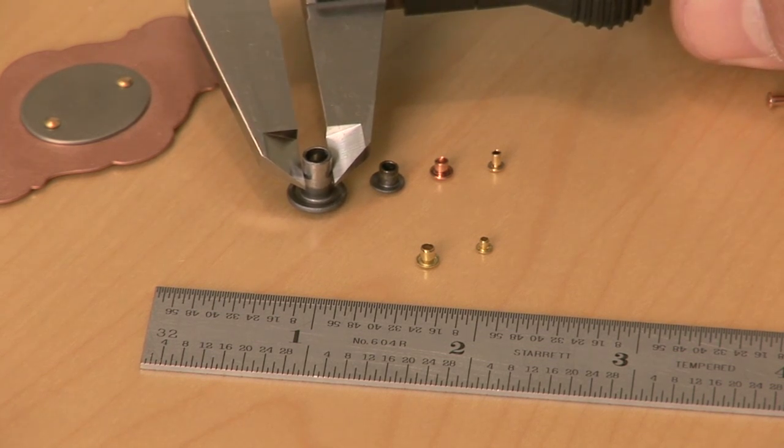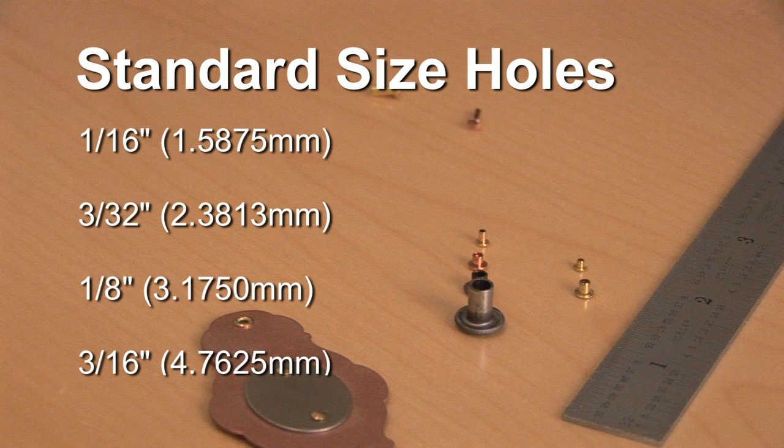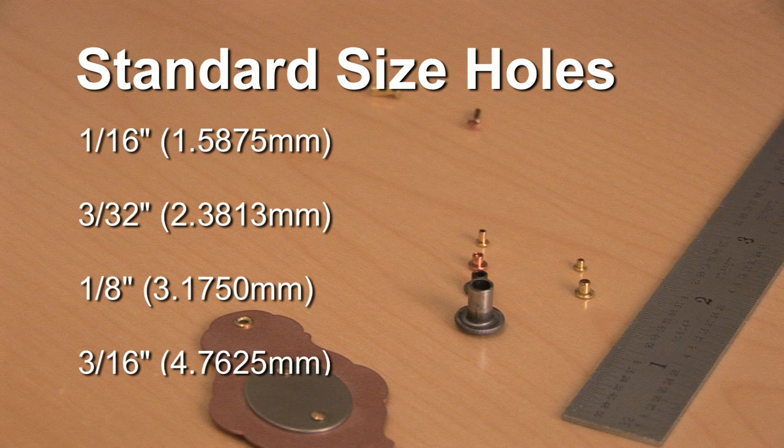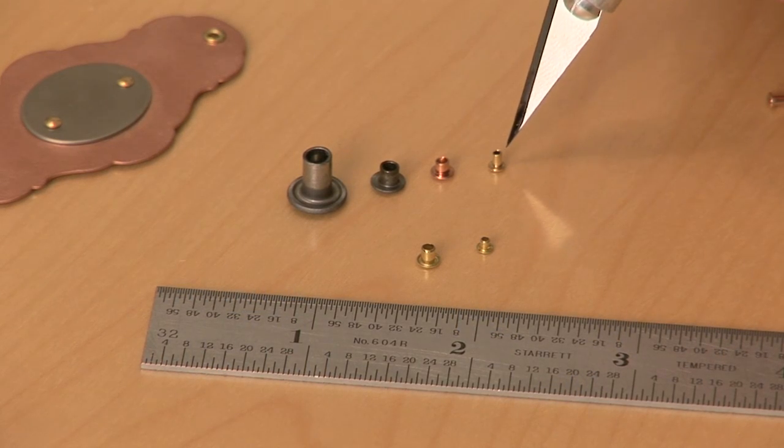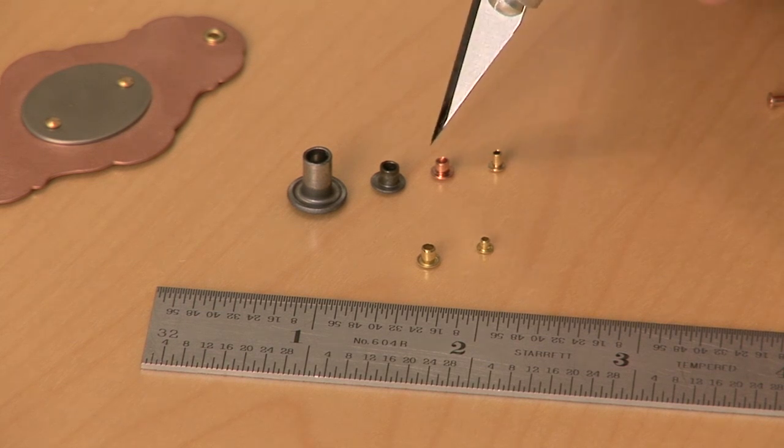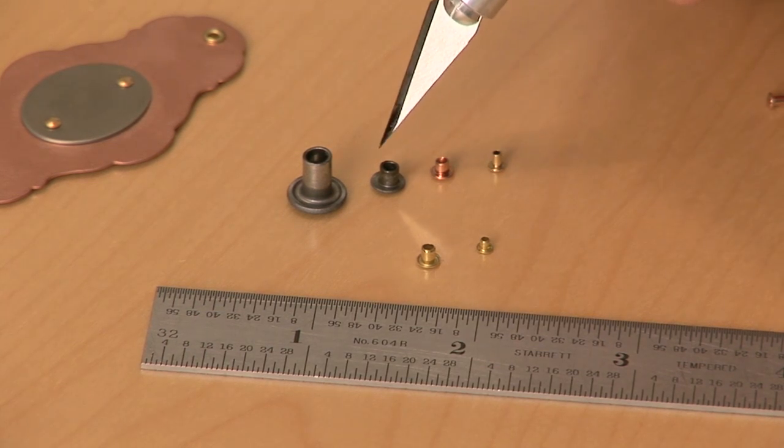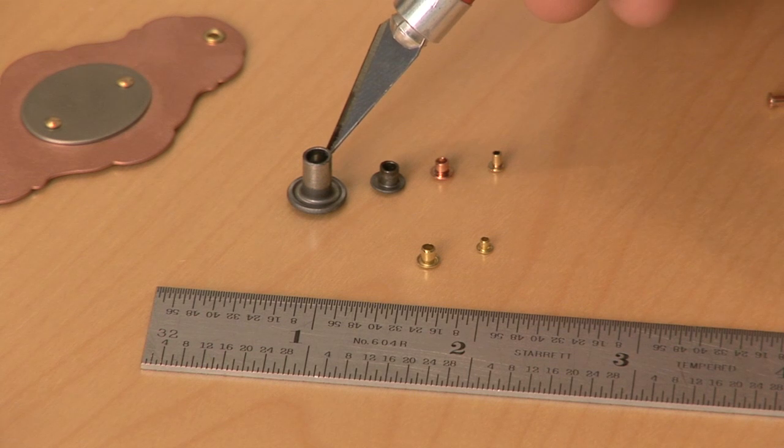Remember, the size rivet you need is determined by the size of the hole you need to fill. So these are designed to go into standard size holes, whether it's a 1/16th hole, a 3/32nd hole, a 1/8th hole, or a sizable 3/16th diameter hole.